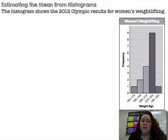Estimating the mean from a histogram. The histogram shows the 2012 Olympic results for women's weightlifting. So they gave us a histogram, and they want us to find the mean based on that histogram. We can't find the exact mean without knowing the values, but I can estimate it because I know that I have one person that lifted between 160 to 179 kilograms.